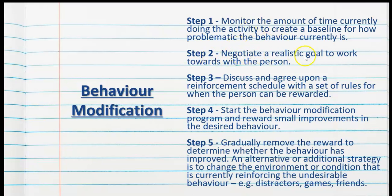Step two is to negotiate a realistic goal to work towards with the person. Step three is to discuss and agree upon a reinforcement schedule with a set of rules for when the person can be rewarded. Step four is to start the behavior modification program and reward small improvements in the desired behavior — in other words, the process of shaping.